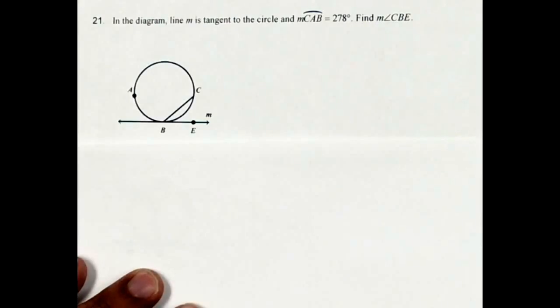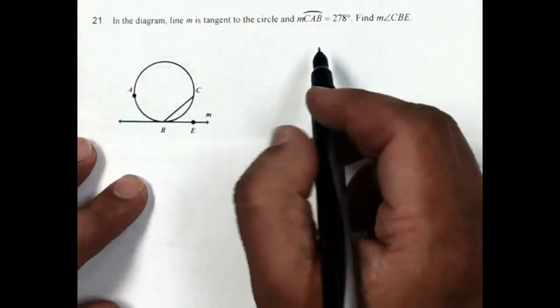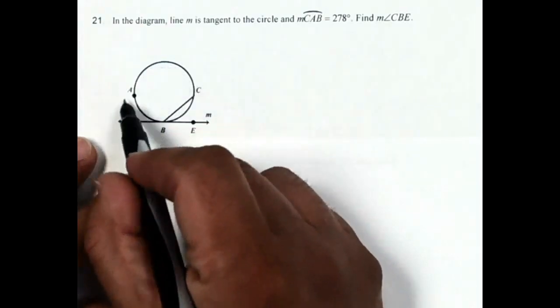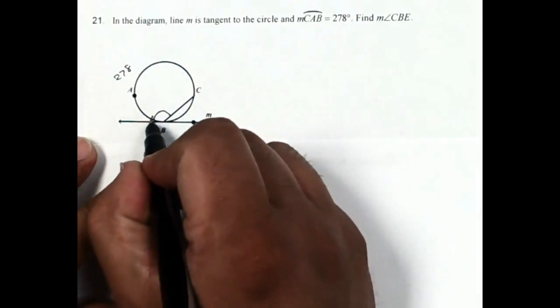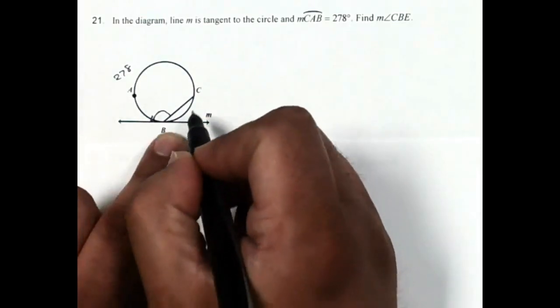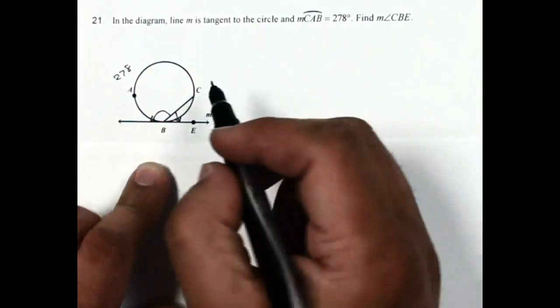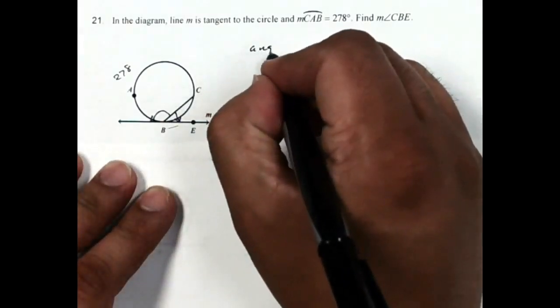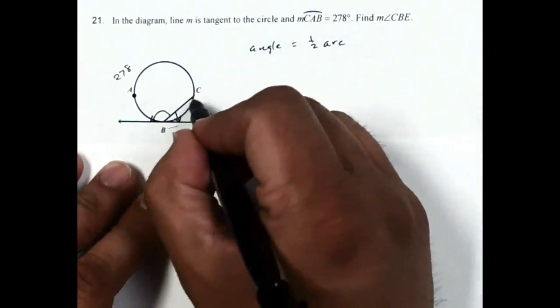Now number 21, it says in the diagram, line M is tangent to the circle, and measure of arc CAB is 278. So the arc from C to A to B, so that's going this way, is 278, going from here to here. If I go around, then this is asking for the measure of arc CBE, which is here. So again, the angle is going to equal half the arc, but the arc I need is actually going right here.